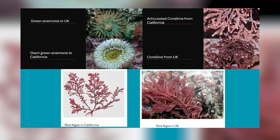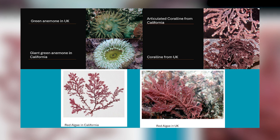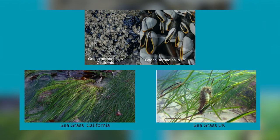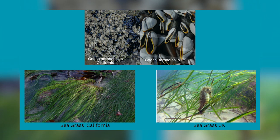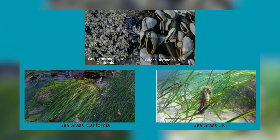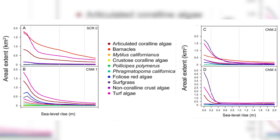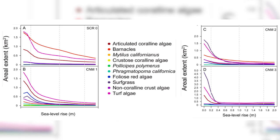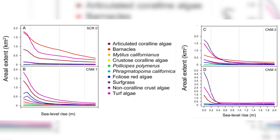While species will be different in California to those found on our rocky shores, we also have coralline algae, brown and red algae, and seagrass, so it is likely that these organisms will react in a similar way to those studied in California. The magnitude of the reductions in these benthic organisms will differ between species, resulting in changes in community structure as the relative abundance of species shifts.